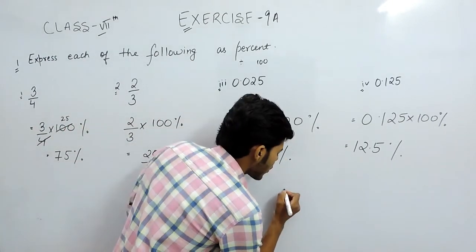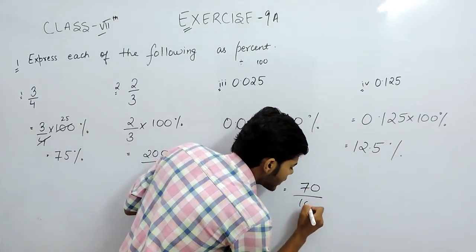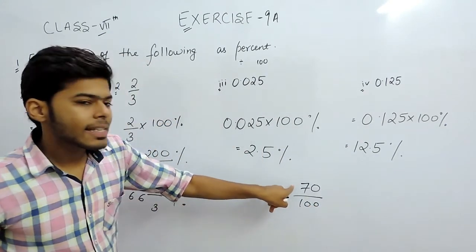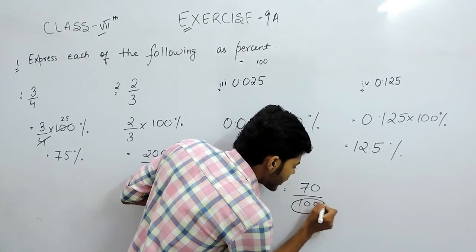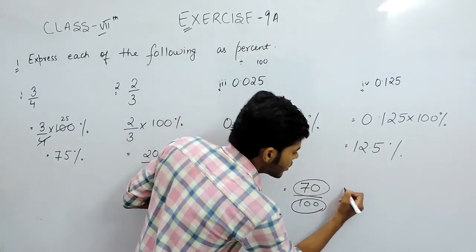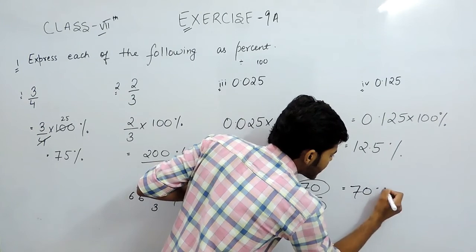For example, if you score 70 marks out of 100, then it will be 70 percent. Why? Because we take the base as 100 in percentage and you have scored 70 marks, therefore 70 percent.